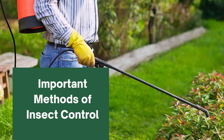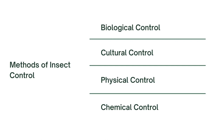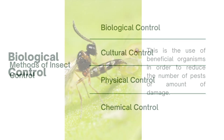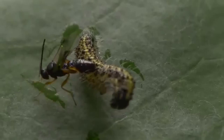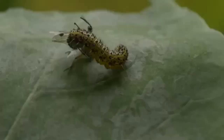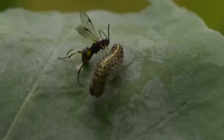There are important methods of insect control: biological control, cultural control, physical control, and chemical control. In biological control, it uses natural enemies. Natural enemies can help to kill insect pests, decrease the reproductive potential, or reduce the number of another organism.